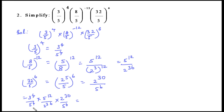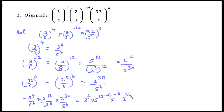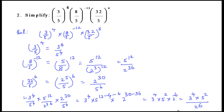Combining: 5^(12−4−6) = 5^2 in the numerator, and 2^(36−30) = 2^6 in the denominator. The result is 3^4 × 5^2 / 2^6.